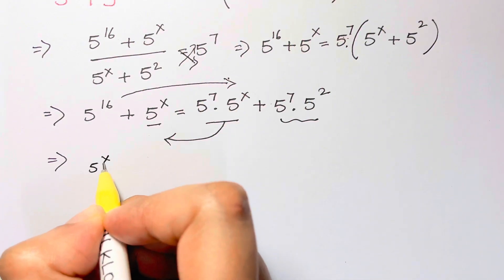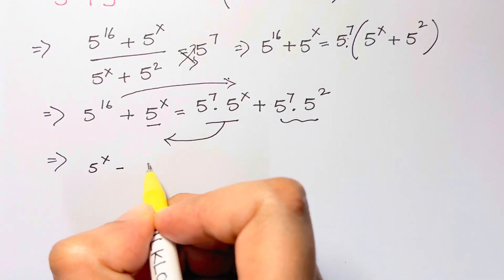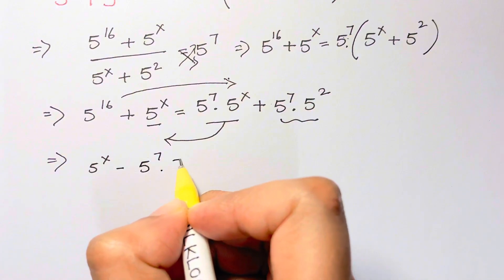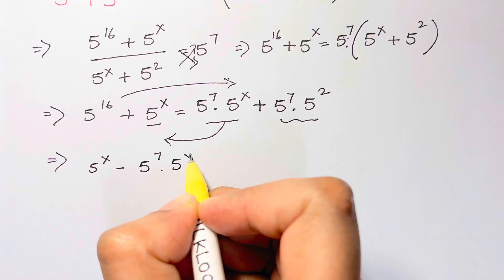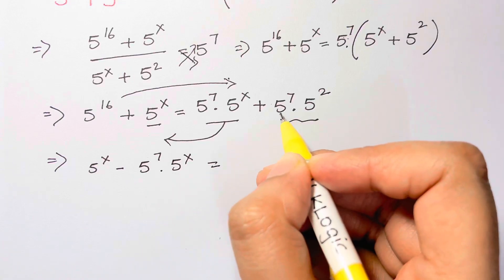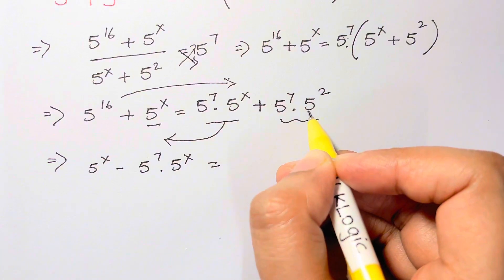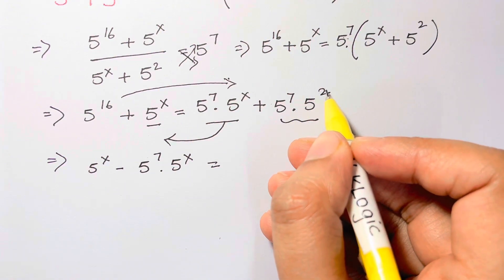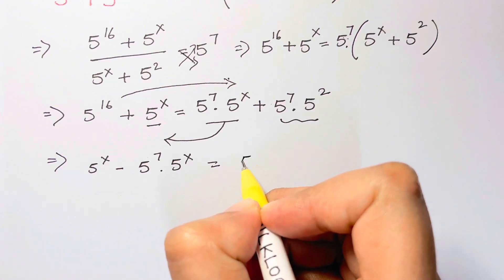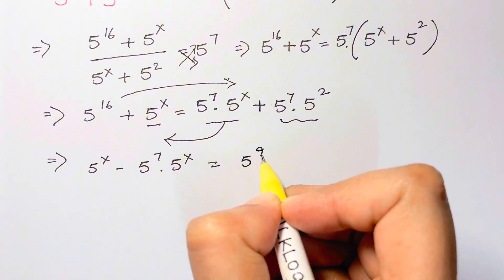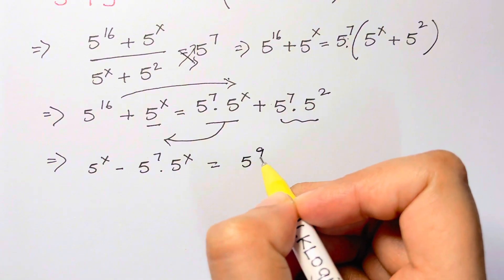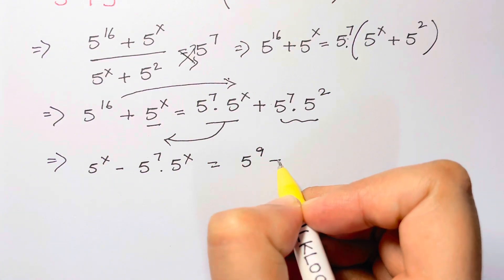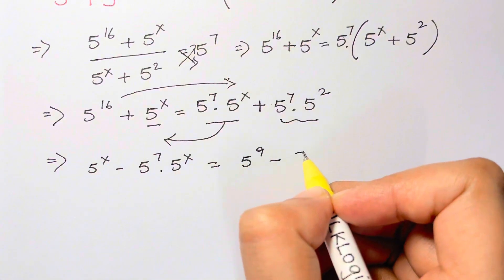...is equal to — when bases are the same and there's multiplication, you add the powers: 7 plus 2 is 9 — so I have 5 to the 9th. And when I bring 5 to the 16 to the other side, I have minus 5 to the 16th.